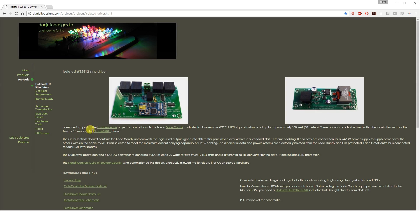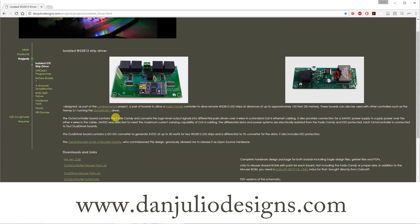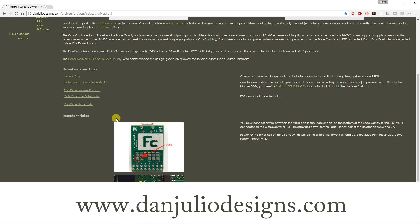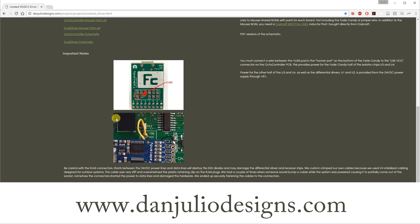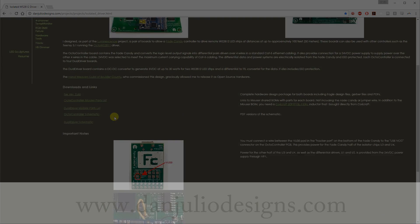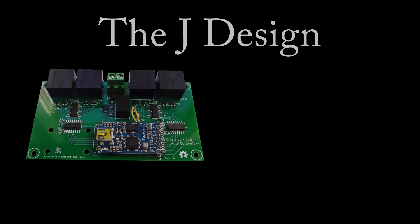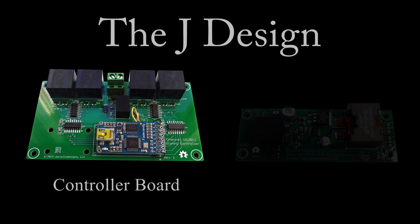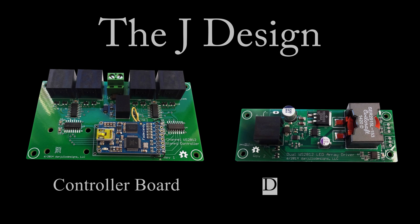I stumbled upon a design by a man named Dan Julio, who has invented an open source system for driving addressable LEDs at up to 100 feet away using a fade candy. I am going to refer to this system as the J-Design. So how does the J-Design accomplish this feat, which solves all of the aforementioned problems? Well, there are two components for this system: a controller board and a driver board.